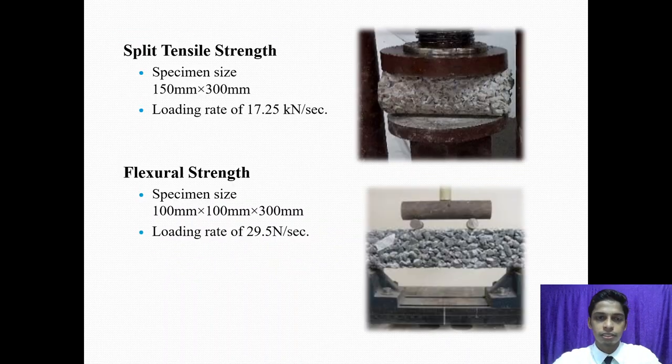Split tensile strength. To determine split tensile strength, we conduct indirect tensile strength test. Apply the compressive load at the lateral surface to find the tensile strength of the cylinder using 150 mm x 300 mm cylinder as per IS recommendation with a loading rate of 17.25 kN per second. Load applied till the crack develops.